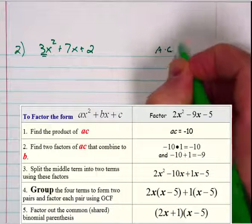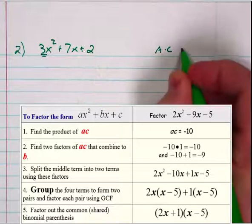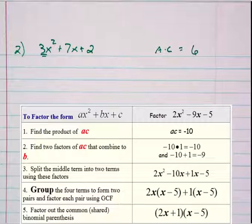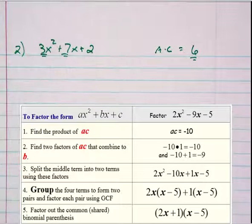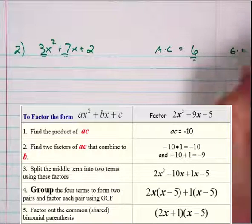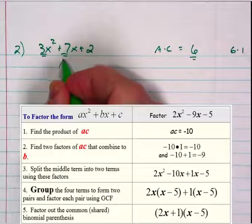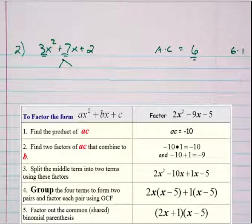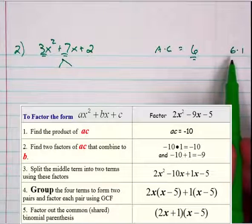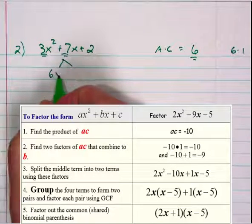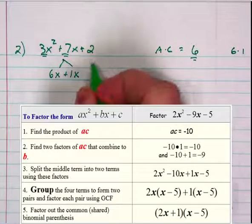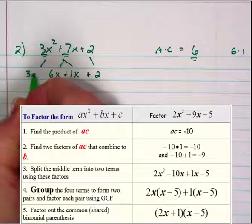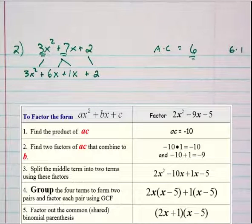A times c: a is 3 and c is positive 2, so 3 times 2 is 6. I need factors of 6 that add to 7 — those would be 6 and 1. I'll break the 7x into 6x and 1x. Since I see a 3 out front, I'll put the 6 with it, writing 3x squared plus 6x plus 1x plus 2. Those middle terms combine back to 7x, so we're just working backwards. I split this right down the middle and look for the GCF on the left side.